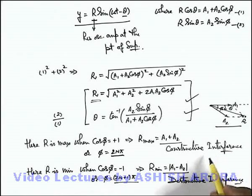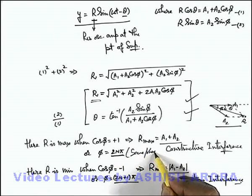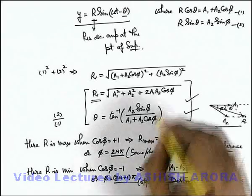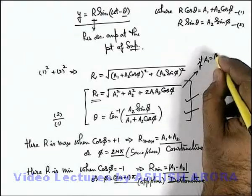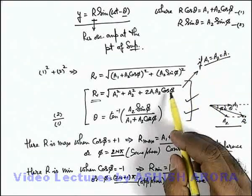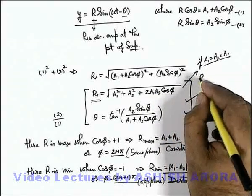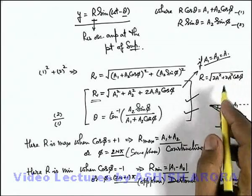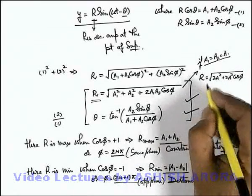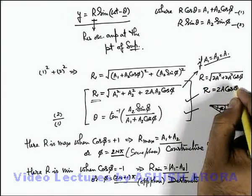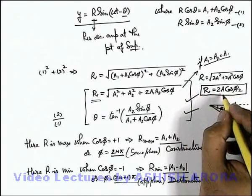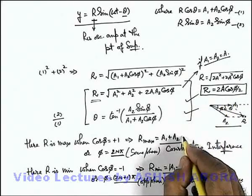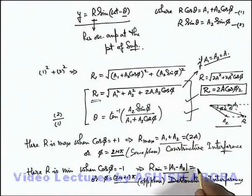Constructive interference takes place when the 2 waves superpose in the same phase, and destructive interference when they superpose in opposite phase. If a1 = a2 = a, the resulting amplitude r = sqrt(2a²(1 + cos phi)) = 2a cos(phi/2). So for equal amplitudes, the maximum amplitude for constructive interference is 2a, and the minimum amplitude for destructive interference is 0.